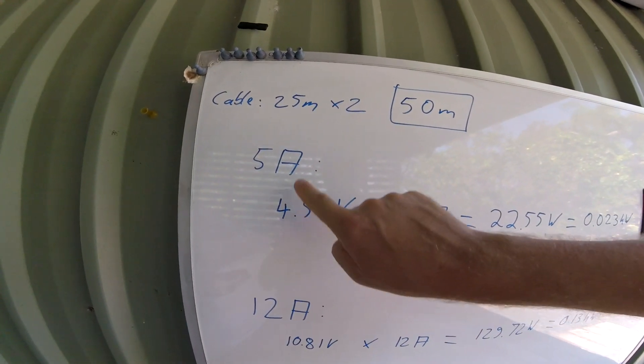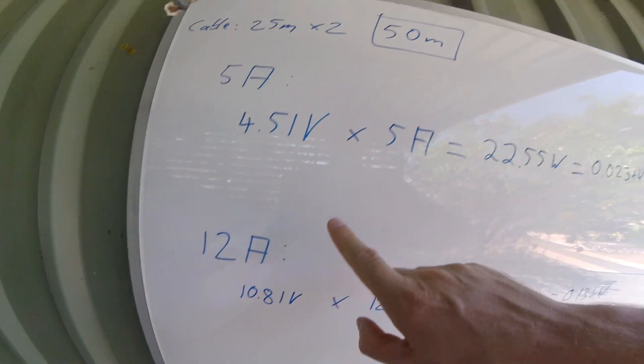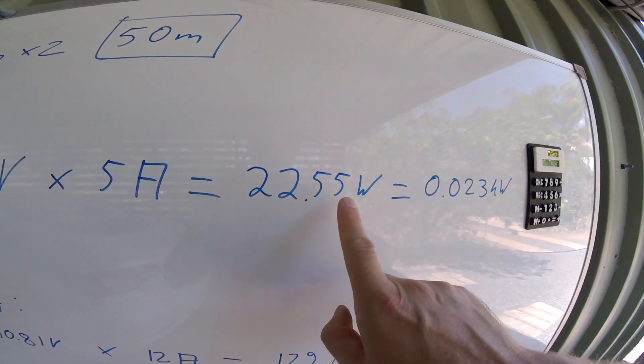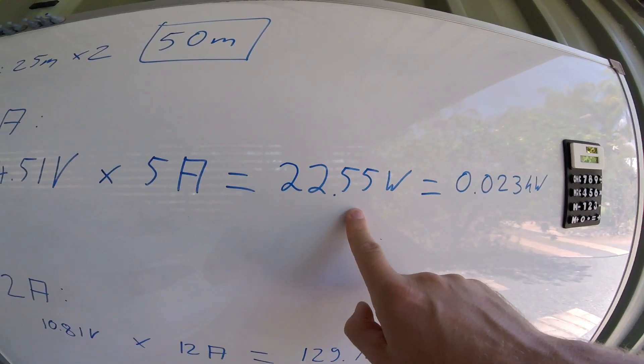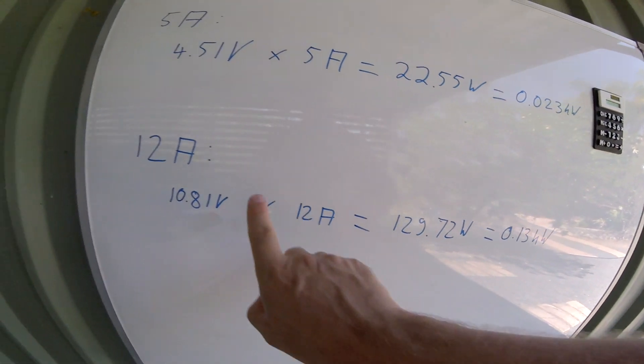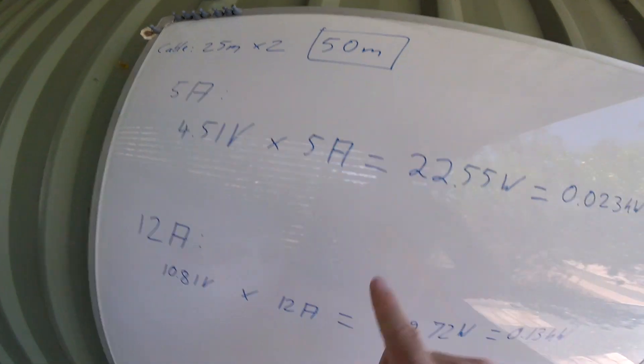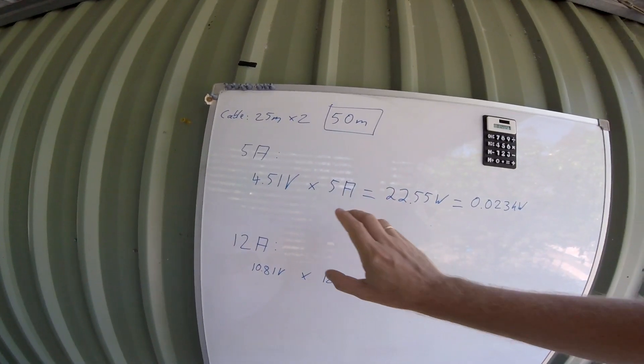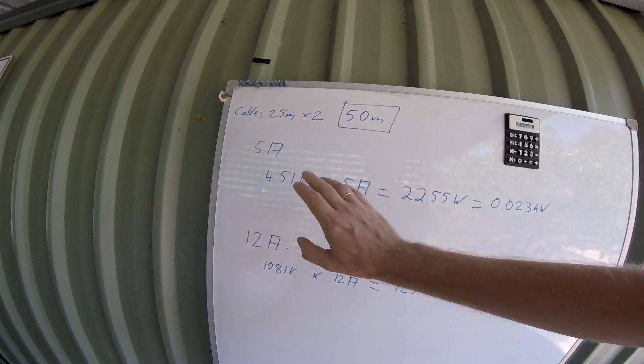We now have the voltage drop for 5 amp and 10 amp for the cable. I multiply this one by 5 amps and I get 22.5 watts will be lost on the cable. While on the 12 amp setting with the same cable, same length, we will have 130 watts. So alone from this, the 5 amp setting seems to be the far better setting to minimize voltage drop here.